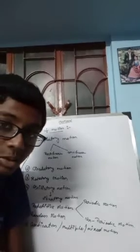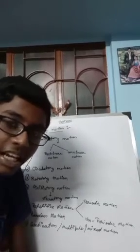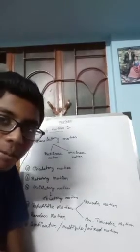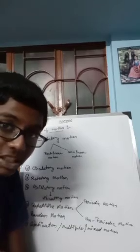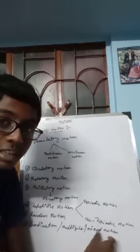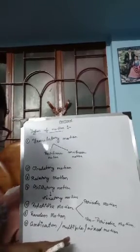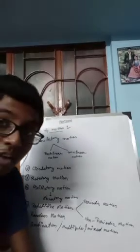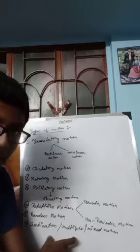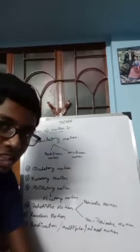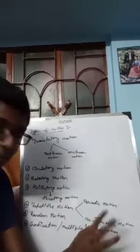In Ratna Sagar books you will find the terms 'combination' and 'multiple motion,' while in Selina books you will find it called 'mixed motion.' Now, one by one, let us cover each type, starting with translatory motion.